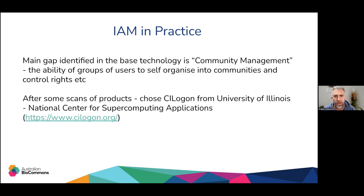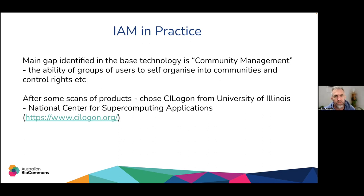We want to enable a service that allows, say, University of Melbourne and University of Queensland to be involved, but not the whole of those universities — we want to gate the community. We want to pick arbitrary people from any institute across Australia and group them, saying these are the admins and these are the members. After scanning products that are out there, we chose CI Logon, a technology stack from the University of Illinois Center for Supercomputing, used a lot in physics and astronomy research in the US, and we've chosen it here to deploy in Australia.